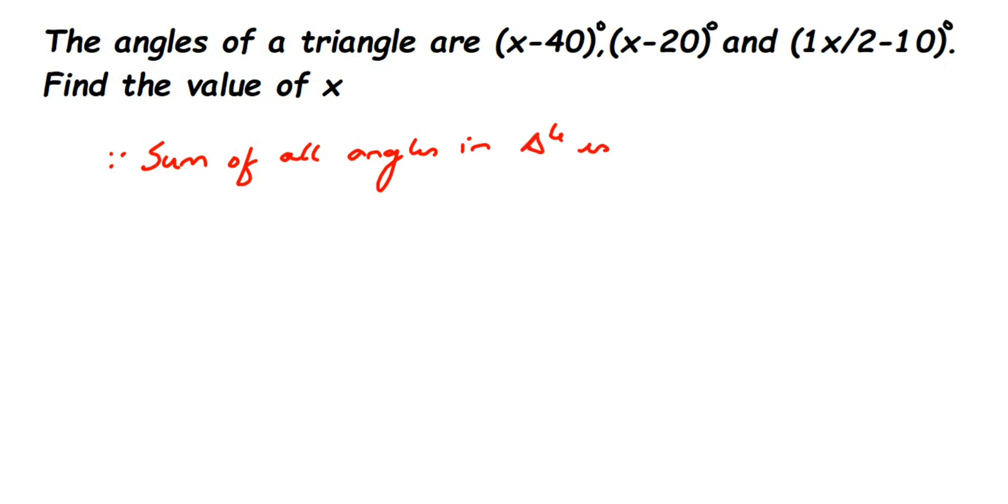Since the sum of all angles in a triangle is 180 degrees, we're going to add all the angles. First angle is (x-40)° plus second angle (x-20)° plus the third angle (x/2-10)°, and this should equal 180 degrees.